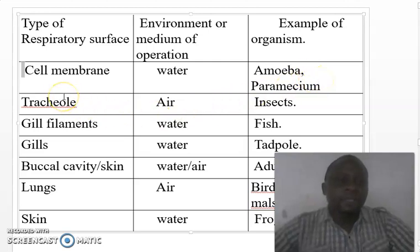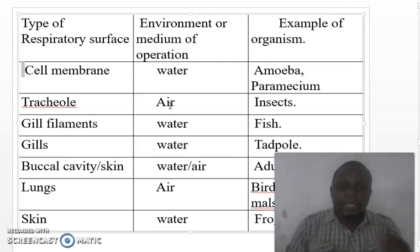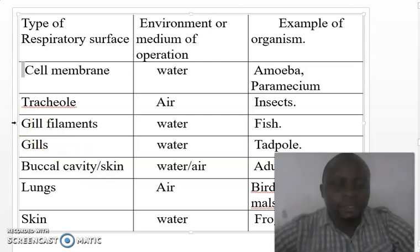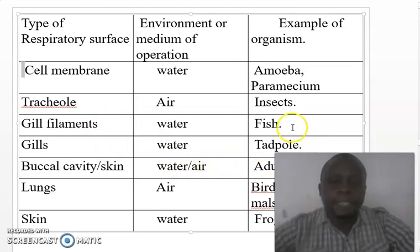A second type of respiratory surface is the tracheole. The organisms with tracheoles live in air, meaning the medium through which gaseous exchange occurs is air. Tracheoles are found in insects. Another type of respiratory surface is the gill filaments. Organisms that have gill filaments usually live in water and extract oxygen from water; examples are fish. Some organisms like tadpoles also have gills and usually live in water.